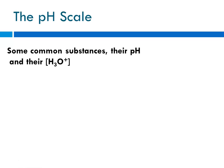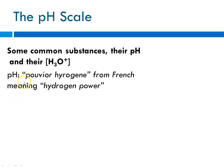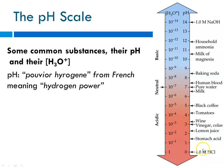The pH scale continued. Here are some common substances with their pH and hydronium ion concentrations. pH comes from French, meaning hydrogen power. Stomach acid is a little above 1. 1 molar hydrochloric acid has a pH of 0. Milk is acidic at about 6.5 — so if you have an upset stomach and think drinking milk will help, it won't. Baking soda is basic at about 8.5. Human blood is slightly basic at about 7.4. Milk of magnesia (antacids) is around 10 to 11, about 10.6. Household ammonia is higher, and 1 molar sodium hydroxide is pH 14.